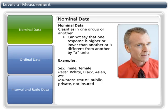So, if I were to describe myself using nominal measures, I would say that I am white, female, a Michigan resident, an epidemiologist, a mother, etc.